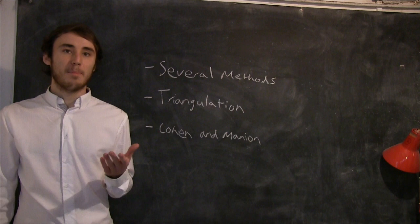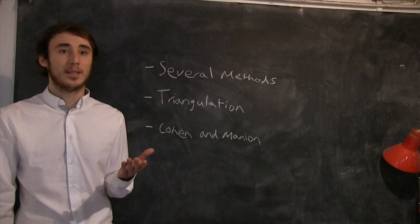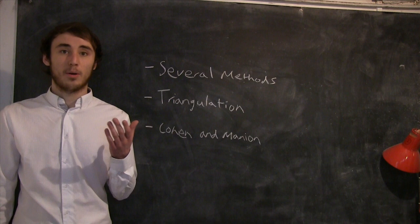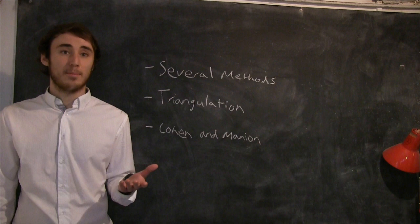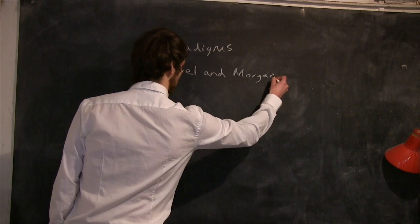Theorists Cohen and Mannion define it as an attempt to map out or explain more fully the richness and complexity of human behaviour by studying it from more than one standpoint. Having a narrow methodology in your dissertation will often be misleading. Therefore, approaching your study from different perspectives or paradigms can help gain a holistic perspective.